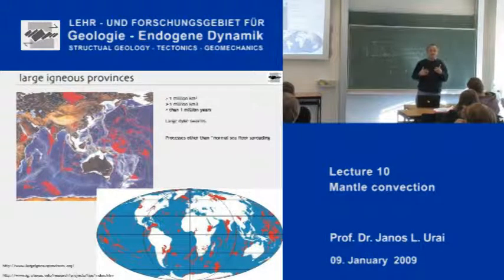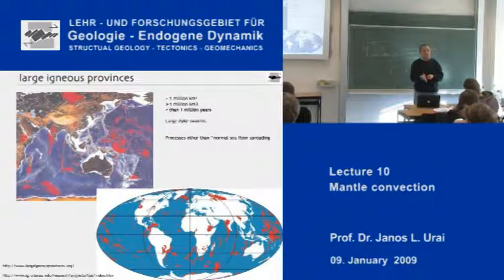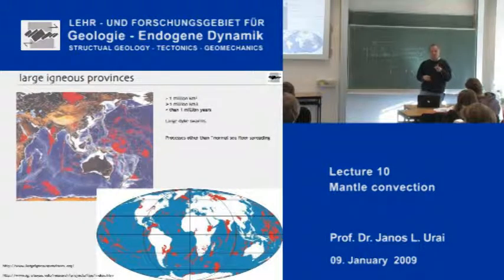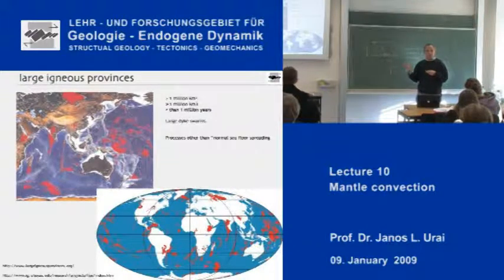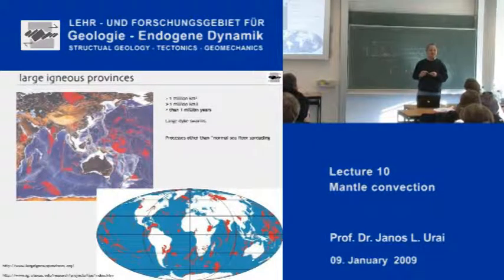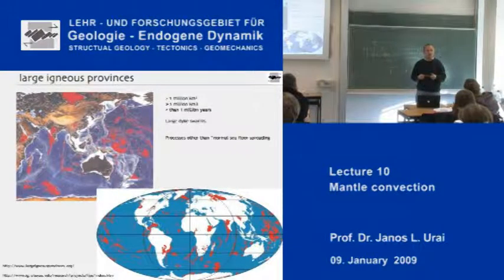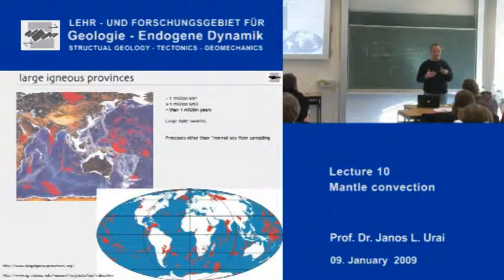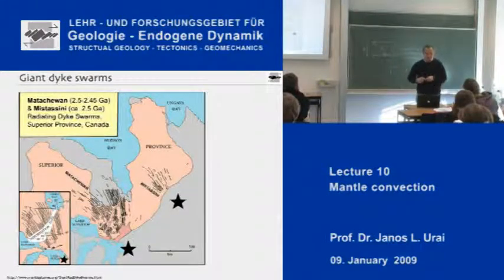These large igneous provinces are not in a simple way directly connected to plate tectonics processes. Of course along mid-oceanic ridges there is also a large amount of magma, but that is not what is meant here. These LIPs are places where a huge amount of magma comes to the Earth's surface not directly related to plate tectonics. A very famous one is the Deccan Traps in India. Another one is in the Afar Triangle in Africa. Models which generate these magmas by plumes or other processes must be able to generate these huge amounts of magma in a very short amount of time. Associated with these large igneous provinces are what people call the giant dike swarms.